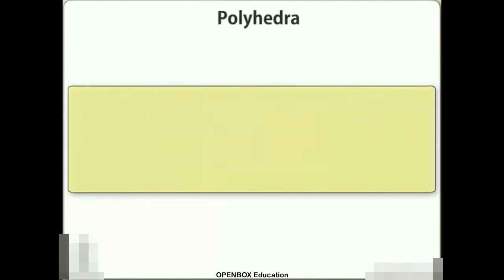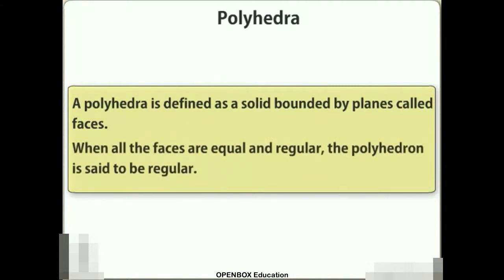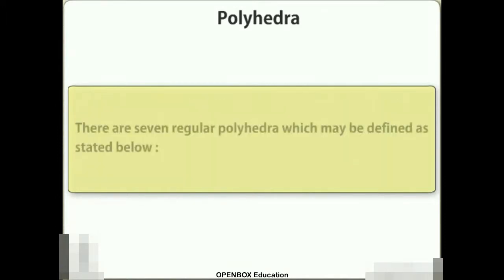Polyhedra. A polyhedron is defined as a solid bounded by planes called faces. When all the faces are equal and regular, the polyhedron is said to be regular. There are seven regular polyhedra which may be defined as stated below.